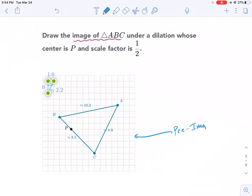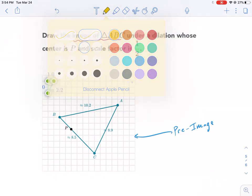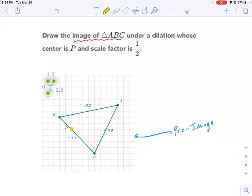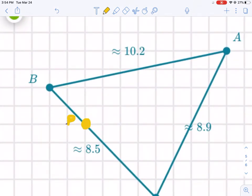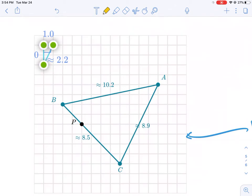Now I'm using Notability, not Khan Academy, because I wanted more freedom to use drawing tools to make this more informative. Drawing the image of triangle ABC under dilation whose center is P. Let's label this center. Here's the center, just in case you didn't see it.